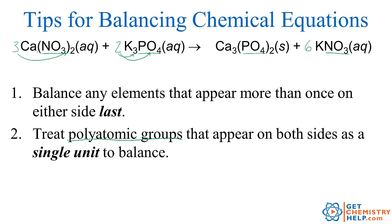So once again, we can check it out. Three calciums on the reactants, three calciums on the products. Three times two — six nitrates on the reactants, six nitrates on the products. Two times three — six potassiums on the reactants, six potassiums on the products. Two phosphates on the reactants, two phosphates on the products. Great.